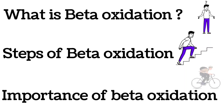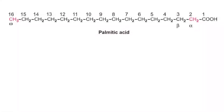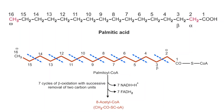The reason it is called beta oxidation is because of oxidation of the beta carbon of a fatty acid. When numbering is given in any fatty acid, one way is starting from the carbon adjacent to the carboxylic carbon. That carbon is called the alpha carbon, and next to the alpha is beta. The last carbon is called the omega carbon. When oxidation happens on this beta carbon and there is successive removal of two carbons as acetyl-CoA, it is called beta oxidation.